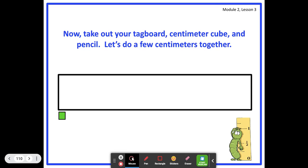Now, you are going to try it. Take out your tag board or a piece of paper, a centimeter cube, and a pencil. And let's do a few centimeters together. One, two, three.